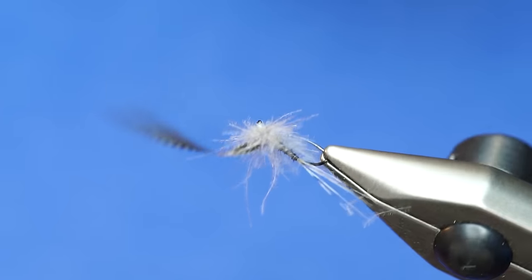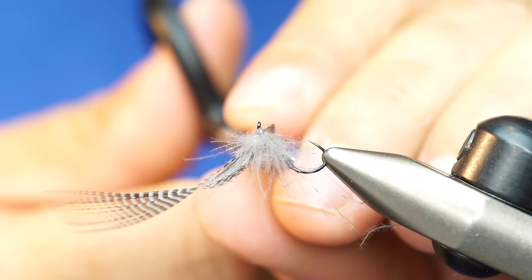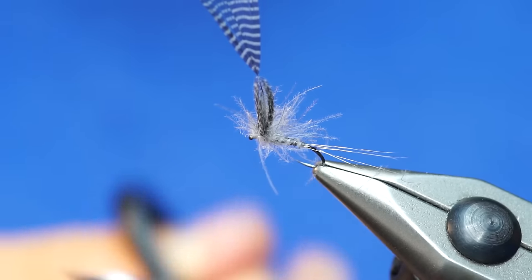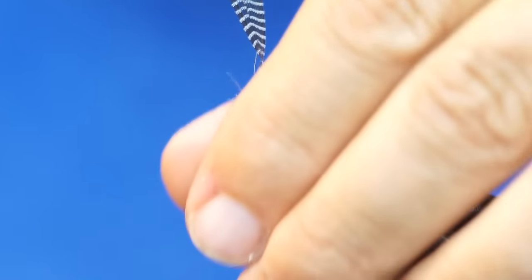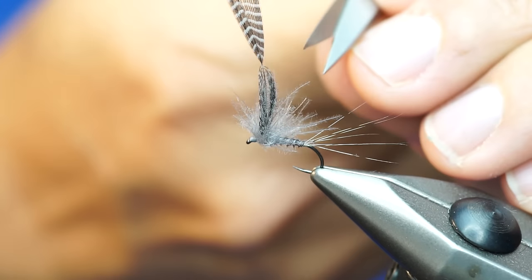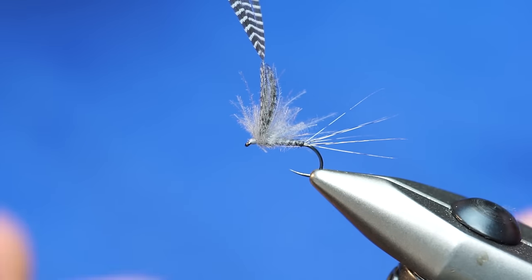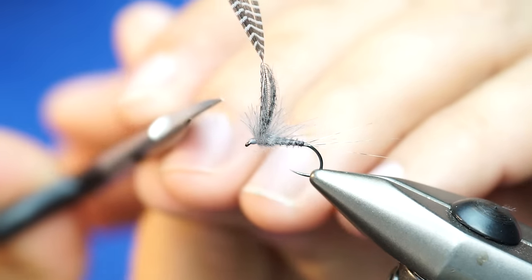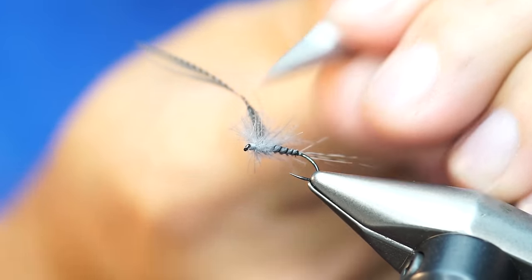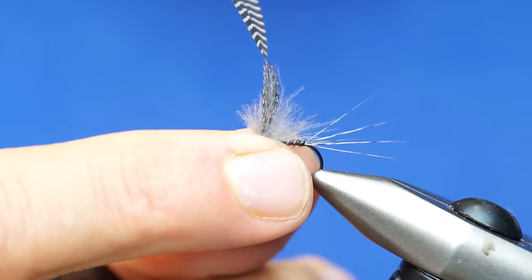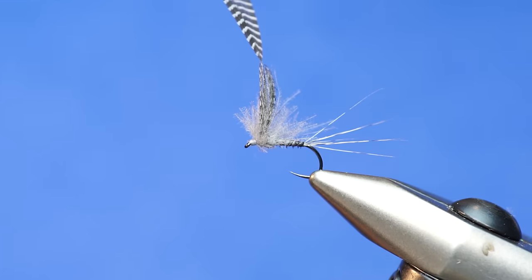Now before I mess with the wing, I'm going to come in here and do some trimming on the CDC. I usually like the bottom to be flush. Then you can kind of pull the CDC up and away from the body, and then come in here and trim any of the ones that are going crazy on us. The main point of the CDC here really is just to basically be like a hackle. This will actually float the fly very nicely.